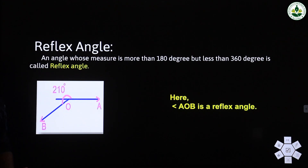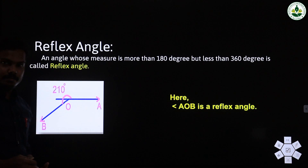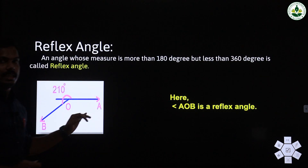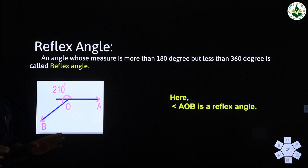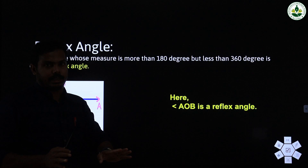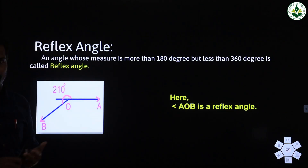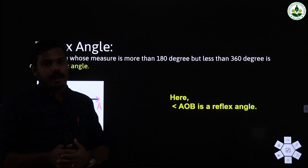Then what about 360 degrees? A 360-degree angle is also called a straight angle. So 0 degrees, 180 degrees, and 360 degrees are all called straight angles.